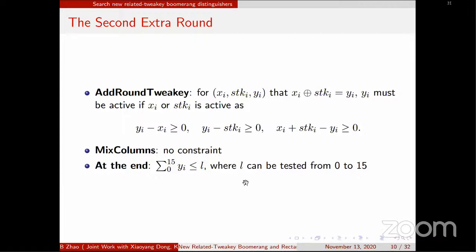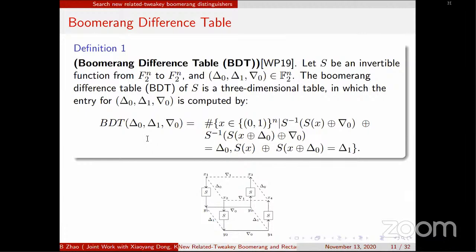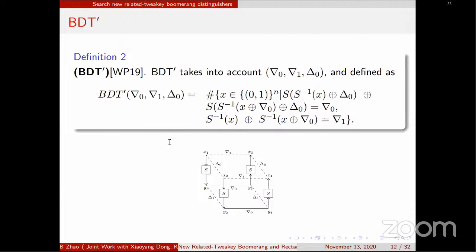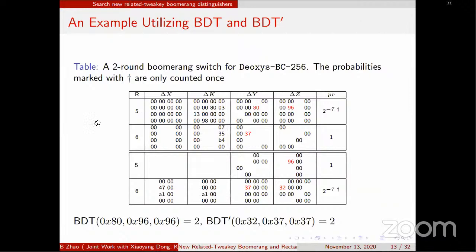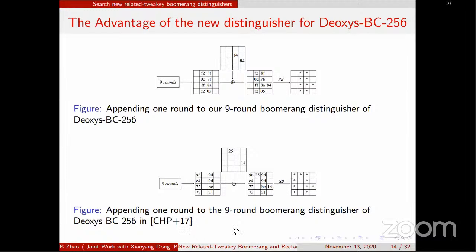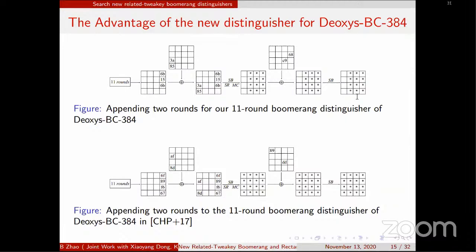The Boomerang Difference Table was proposed by Cid et al. We can think of it as a little boomerang, and the BDT framework considers the opposite direction. For the version 2-256, we extend one round for the 9-round distinguisher; after SubBytes there are 9 active bytes. For version 3-84, if we extend two rounds for the 11-round distinguisher, after SubBytes there will be 12 active bytes. But after MixColumns all bytes will be active.